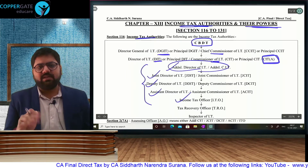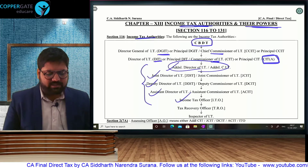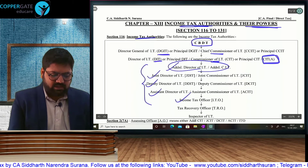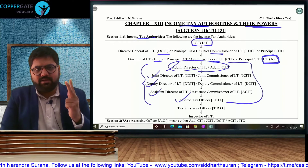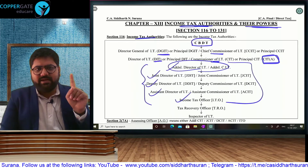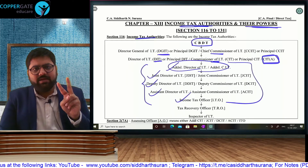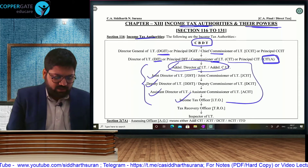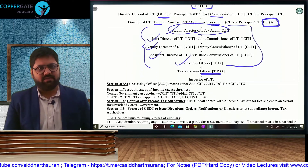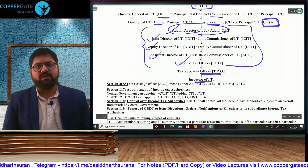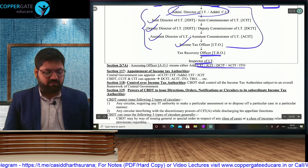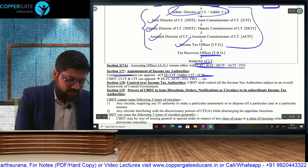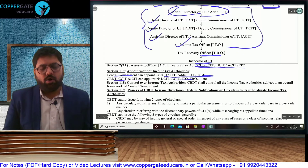Additional has a double role — if the Commissioner is absent, the Additional will also handle that responsibility and sometimes handle assessments. In real life, maximum assessments are done by Joint, Deputy, Assistant, and ITO, but sometimes Additional also — thus five levels of AO. For recovery purposes, we have a Tax Recovery Officer if the assessee is not paying taxes, and an Inspector for clerical work. Central government will appoint officers up to Joint level, and CBDT/CCIT or CIT will appoint officers below Joint.